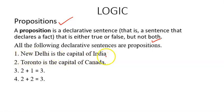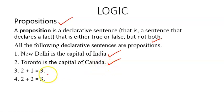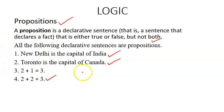New Delhi is the capital of India — this is a declarative statement. Toronto is the capital of Canada — this is also a declarative statement. 2 plus 1 is equal to 3: it is being declared that 2 plus 1 equals 3, and whether it is true or false we will see later. 2 plus 2 is equal to 3.